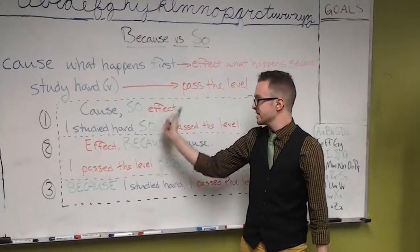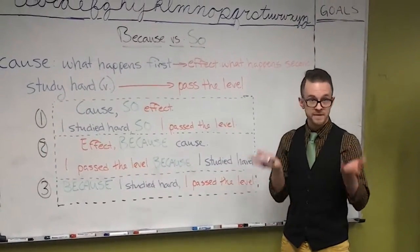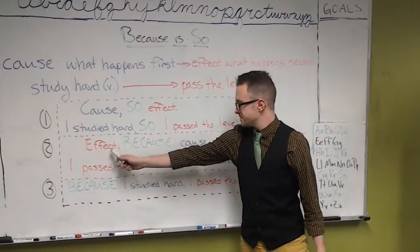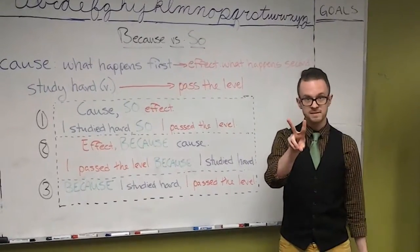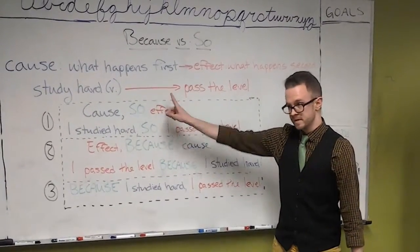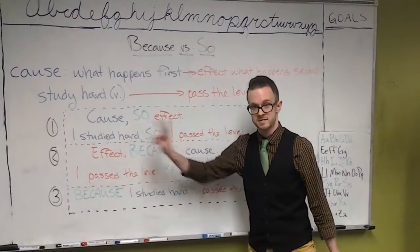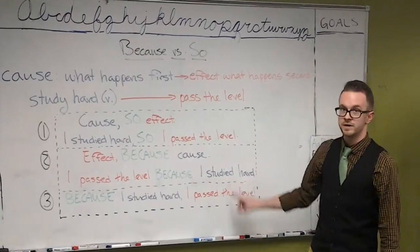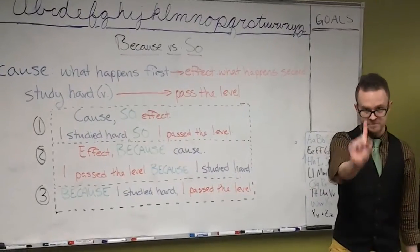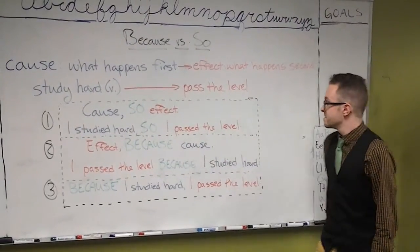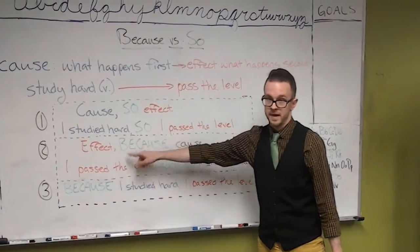The second case is when we want to say the effect first: effect, because, cause. In this case we will start with the second thing that happens, not the first. So we begin with 'I passed the level' — the effect, the second thing — 'because I studied hard' — the cause, the first thing. There's one small difference to notice when writing: there is a comma when the cause comes first, but there is no comma when the effect comes first.